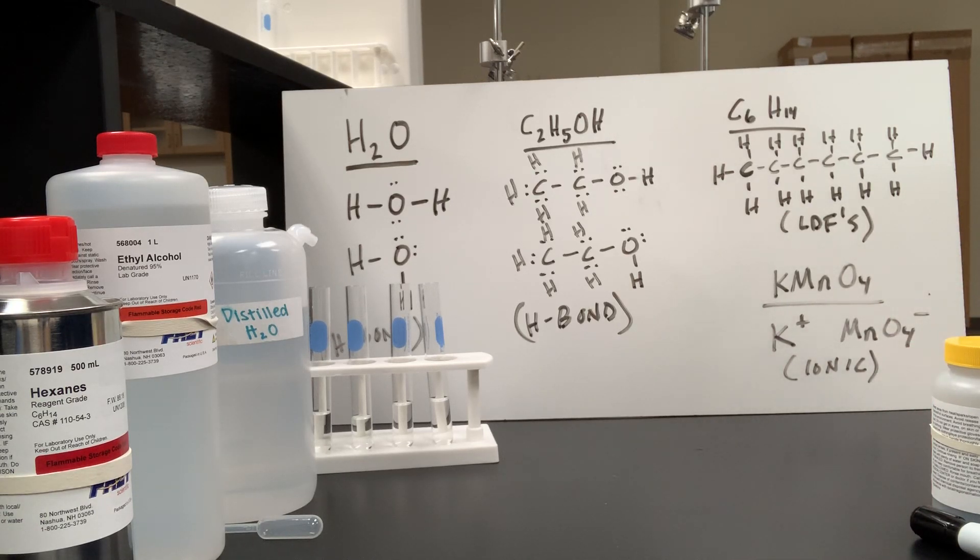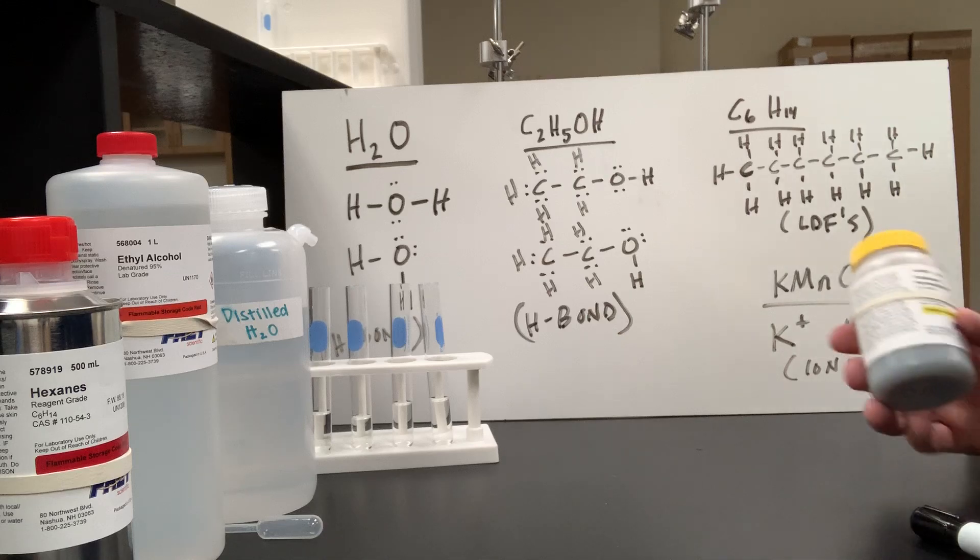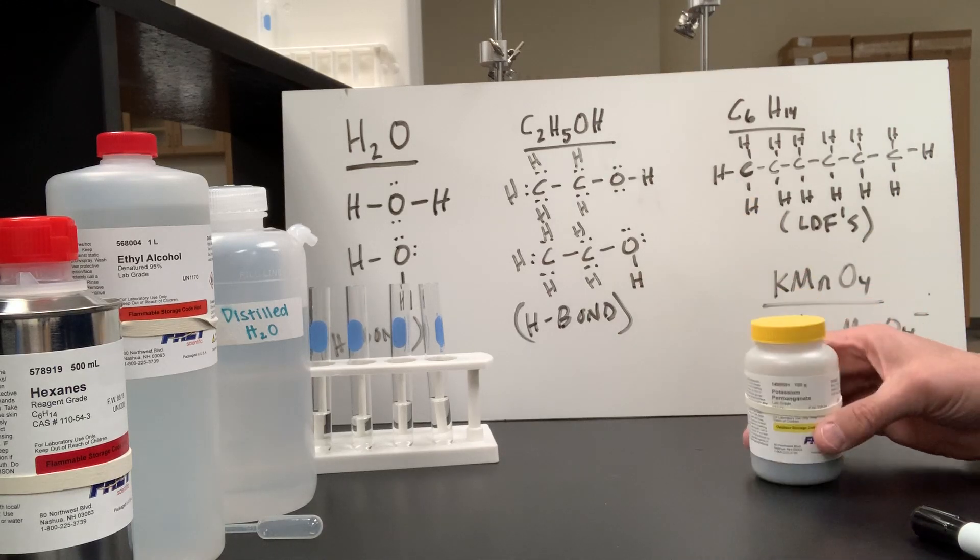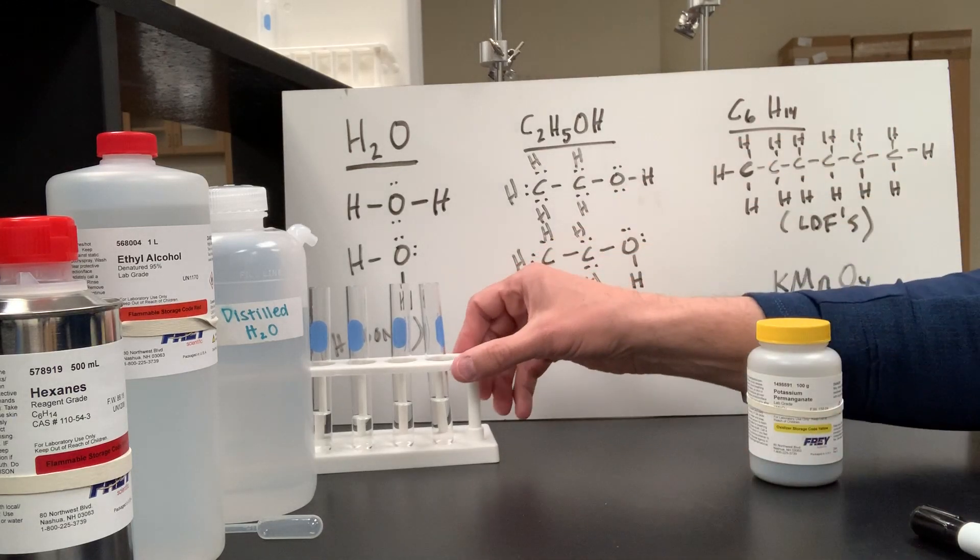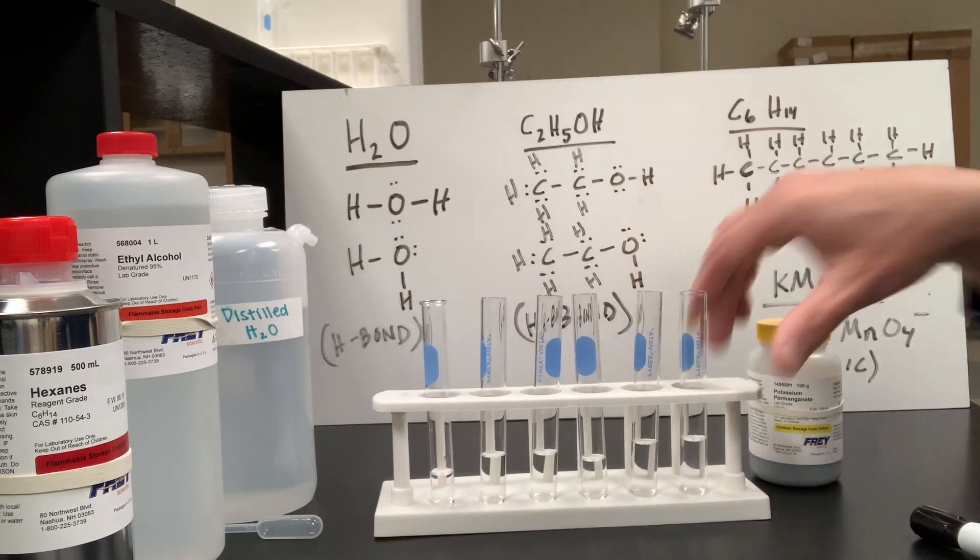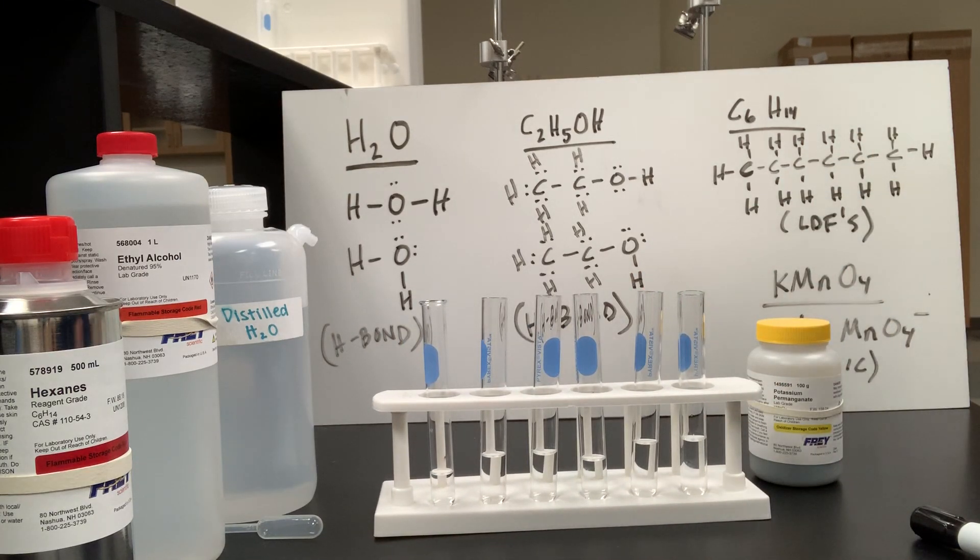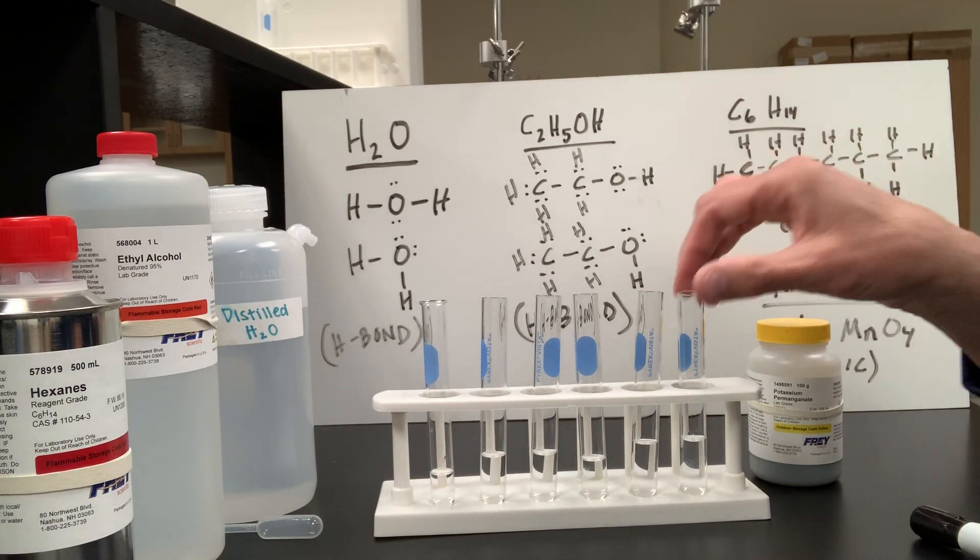Now potassium permanganate is ionic. It consists of a potassium positive ion and a permanganate negative ion, and it is a solid at room temperature. Now, how well do you think potassium permanganate will dissolve in each of these liquids? Well, let's find out.